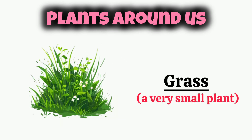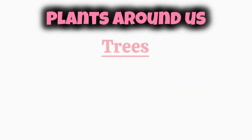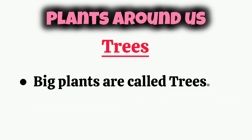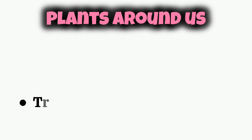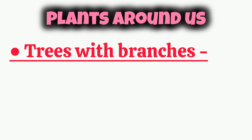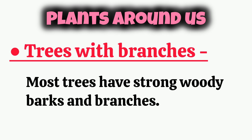Grass is a very small plant. Big plants are called trees. Trees are very tall and strong — they stand erect. Most trees have strong woody barks and branches.